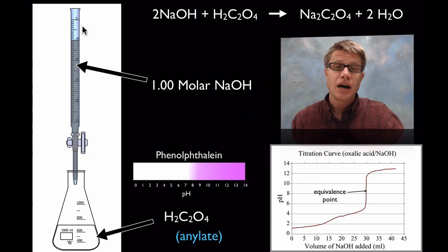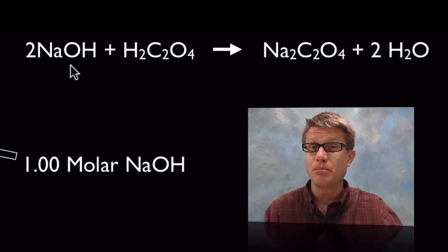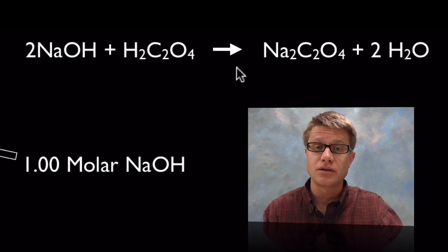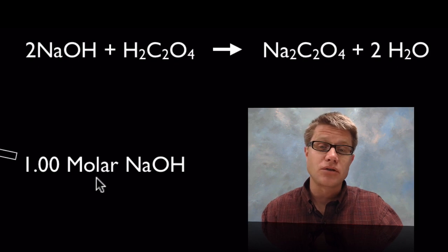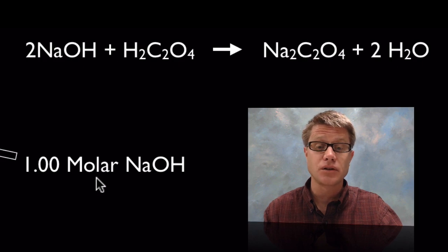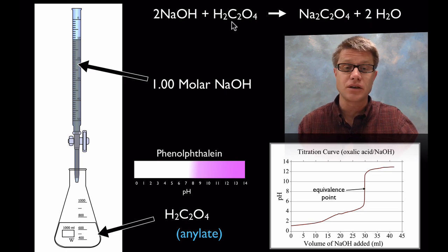Let's go to titration. How does titration work? Let's say we've got this reaction: sodium hydroxide, which is a base with a very high pH, combining with oxalic acid, making sodium oxalate and a little bit of water. Here are the 2 reactants and 2 products. Let's say we start with a 1 molar sodium hydroxide solution — that means 1 mole of sodium hydroxide for every liter of solution — and our analyte is going to be this oxalic acid. We want to do a titration and then work backwards to figure out how much of it we have.